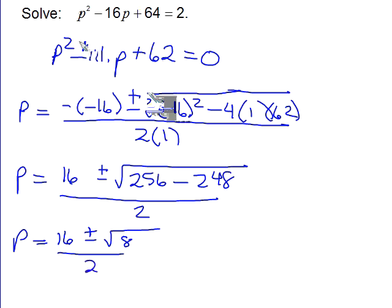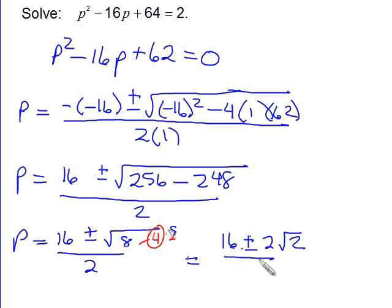Now I can simplify 8 as a square root because it's 4 times 2, and 4 is a perfect square root. So this will give us 16 plus or minus the square root of 4 is 2, leaving us with this other 2 inside, all divided by 2. And now, since they all have a 2 in common, I can divide out that 2, leaving me an 8 plus or minus square root of 2, and it would be over 1, so I'll just write it this way.